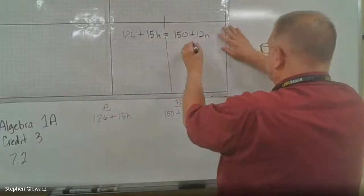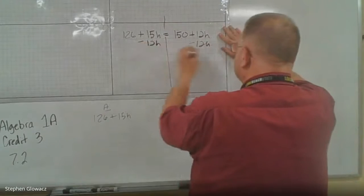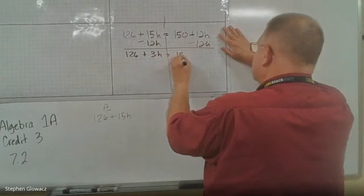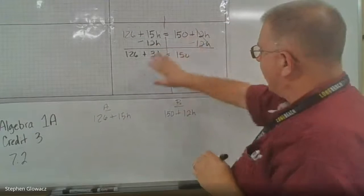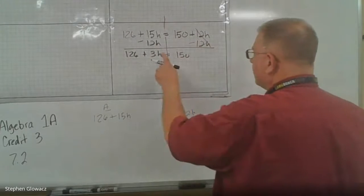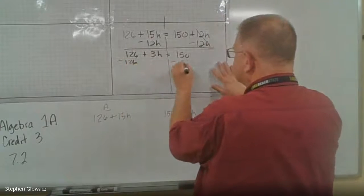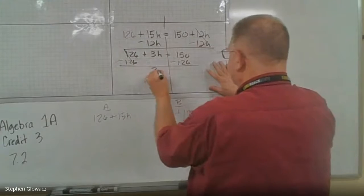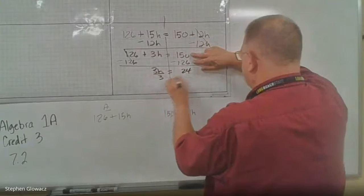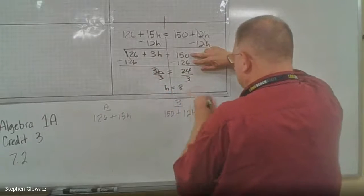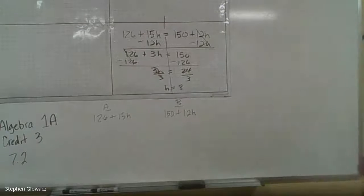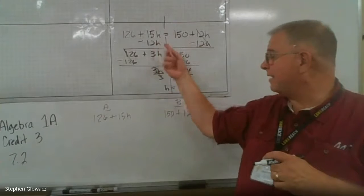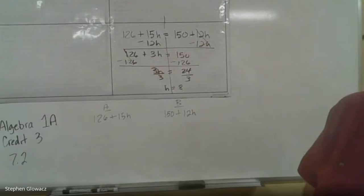Variables are on both sides, so subtract 12H from both sides: 126 plus 3H equals 150. Now subtract 126 from both sides: 3H equals 24. Divide by 3, and H equals 8. So after 8 hours is when both jewelers charge the same amount. Just like the babysitter problem, you can plug in H to find the actual charge, but they don't ask us here.